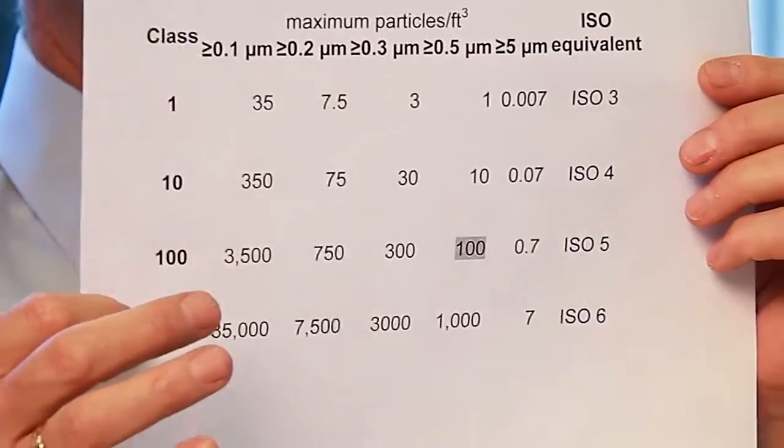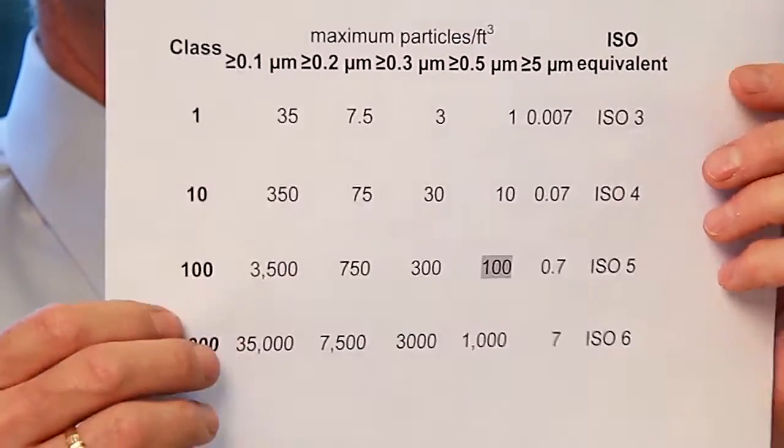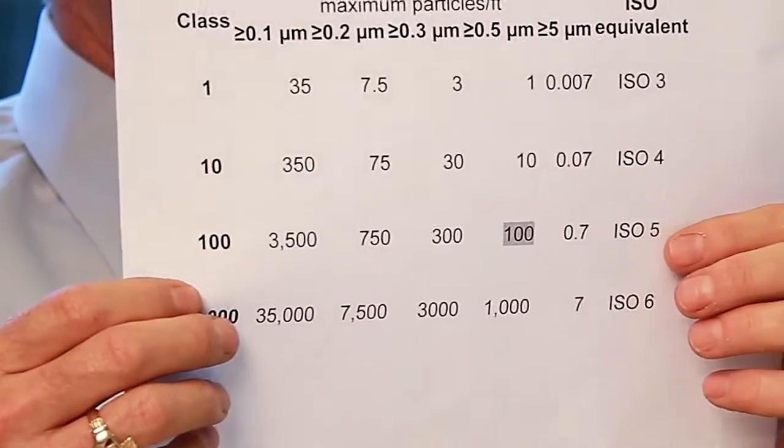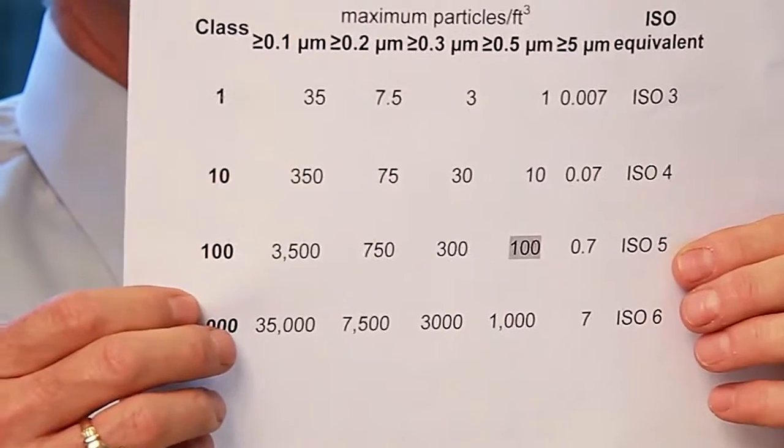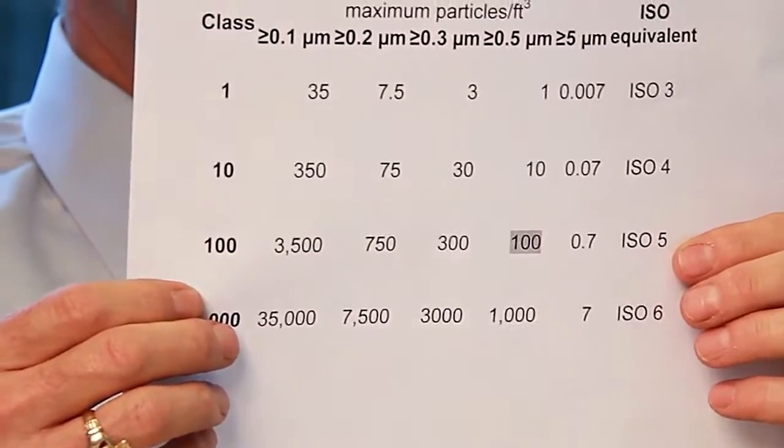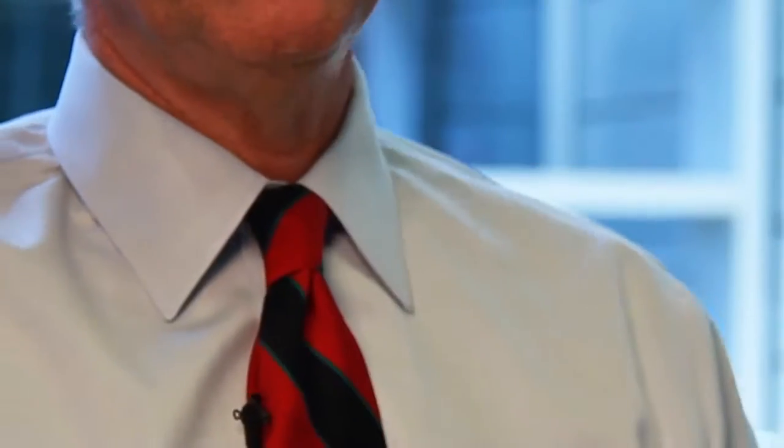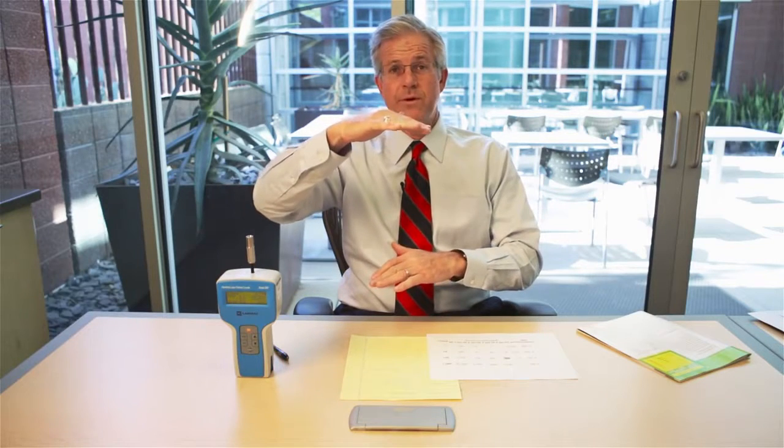The class 100 English system correlates to the ISO number five system. So, within a class 100 clean room we can have no greater than 100 particles less than half a micron. How are we going to determine that? Because a half-micron particle size is not detectable to the naked eye.